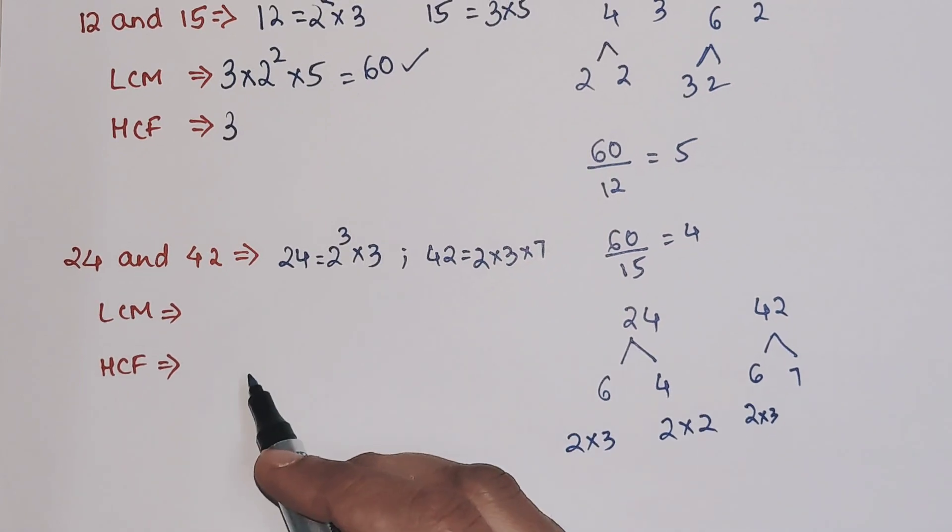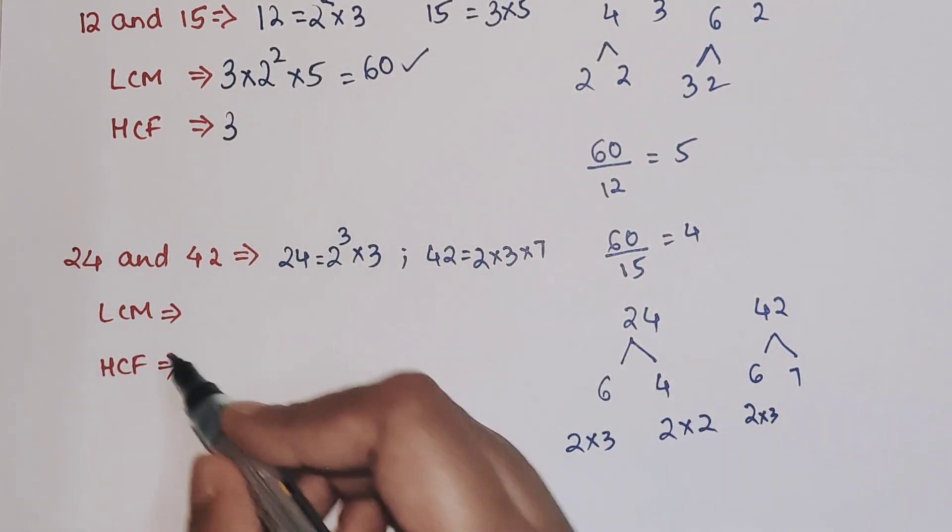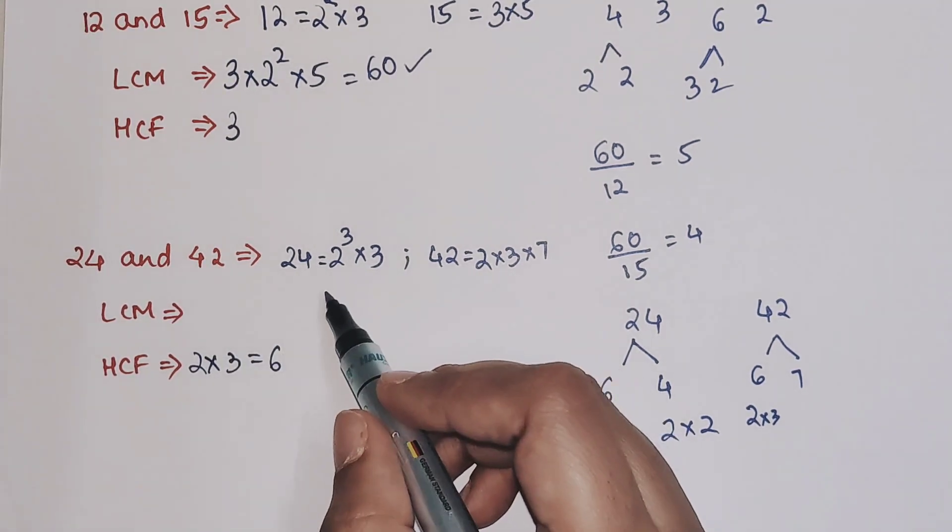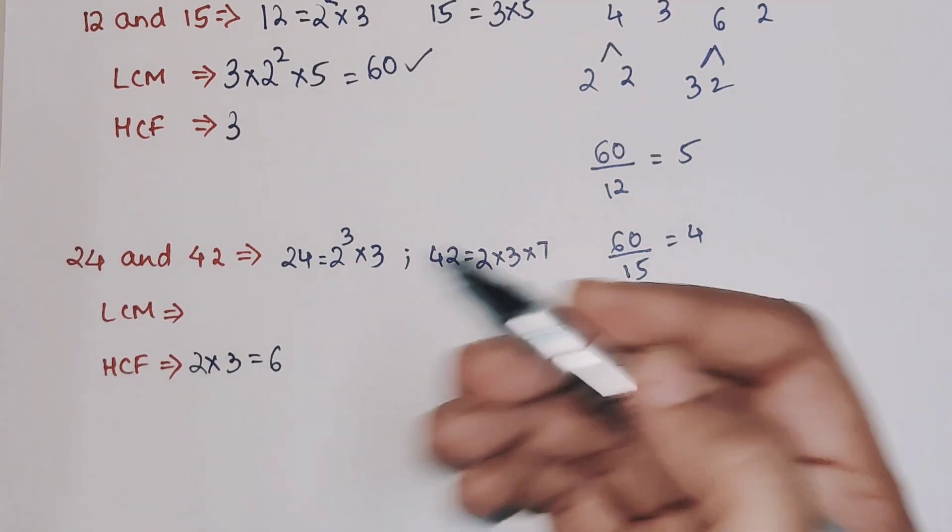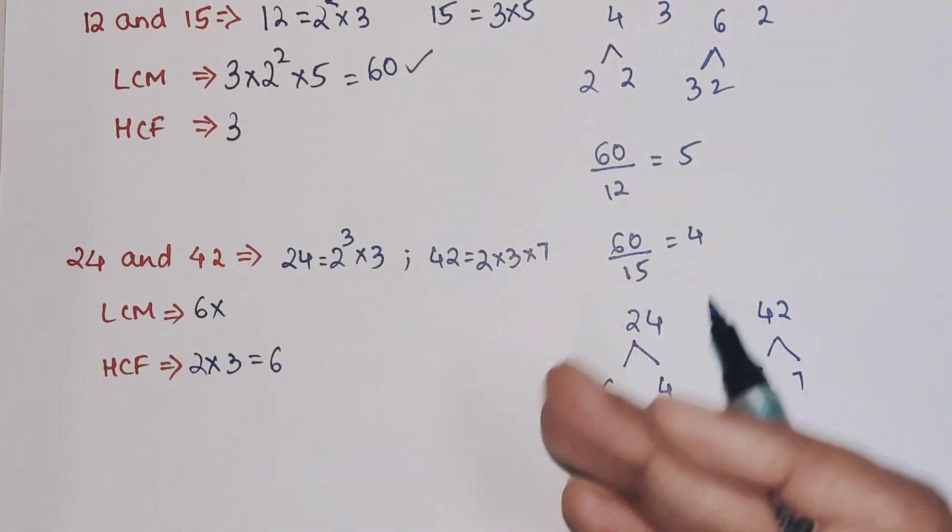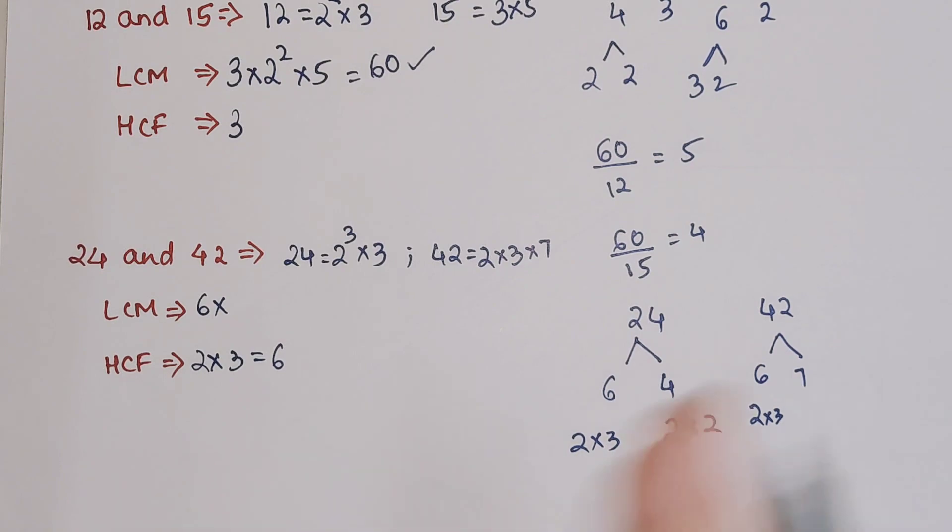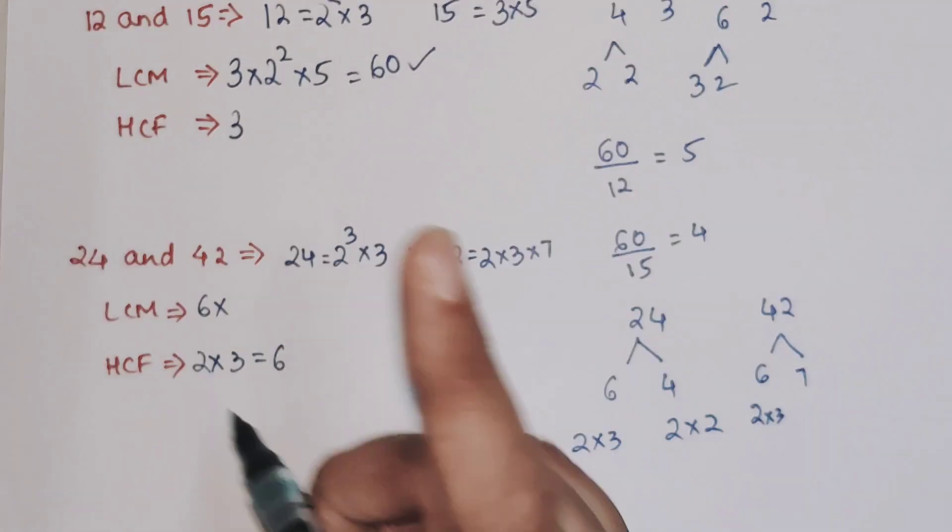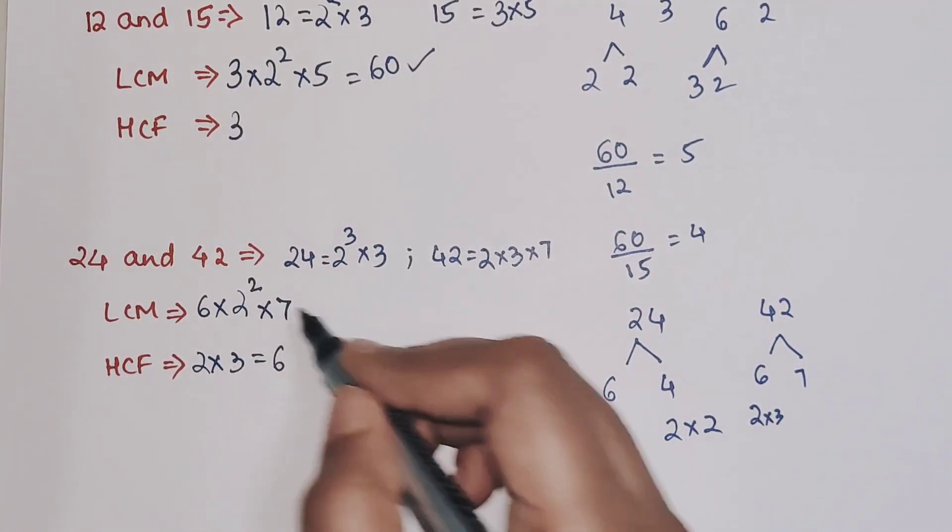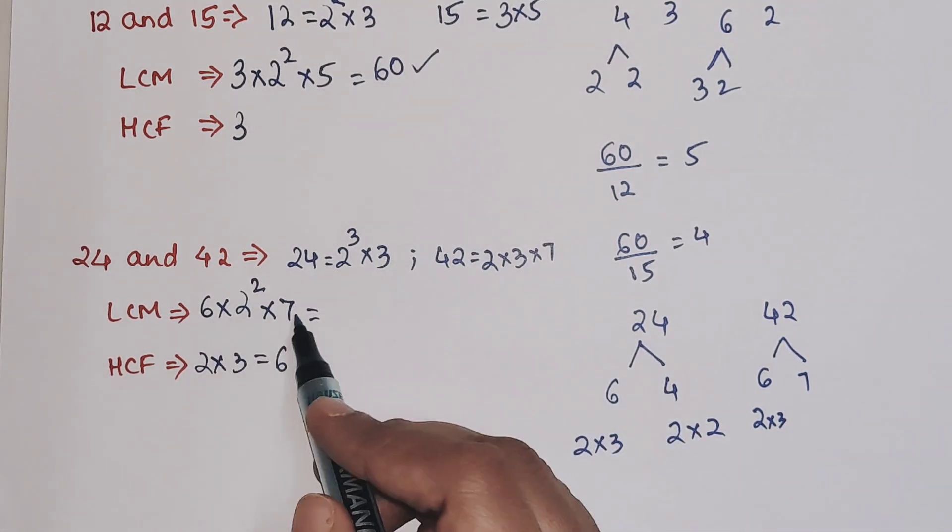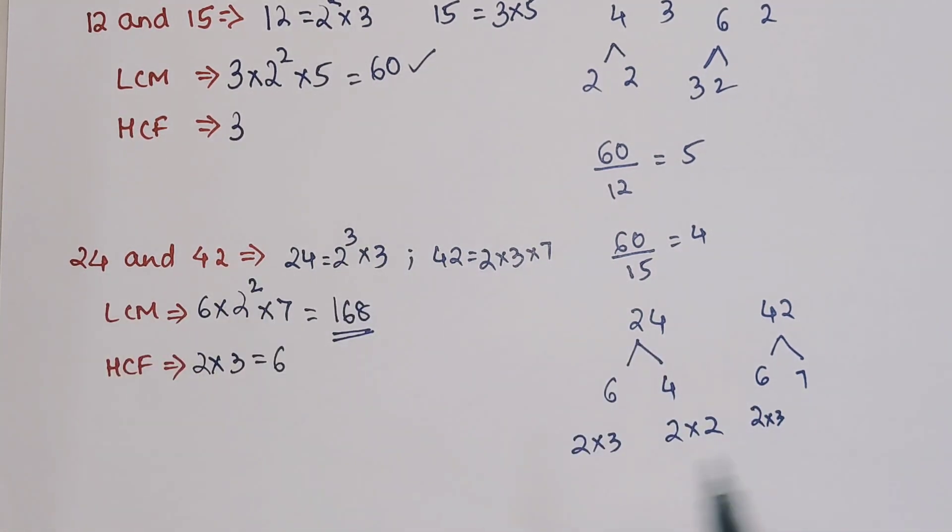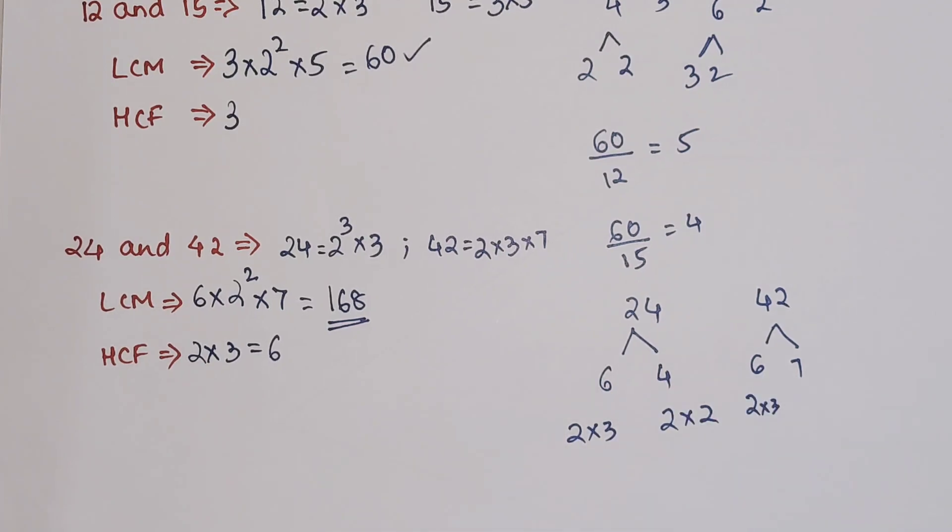Now over here, let's take what is your HCF. Your HCF is 2 into 3, that's the only thing common. So 2 into 3 comes out to be 6. Now for your LCM, you will take 6, using the HCF value first. Then you will take into consideration the rest of the numbers. Out of 2³, only one 2 is considered for 6, so the rest 2² will be considered here, and then we have 7. So this comes out to be 42 into 4, that gets you 168. That is your LCM for 24 and 42. I hope you all are getting the hang of these things.